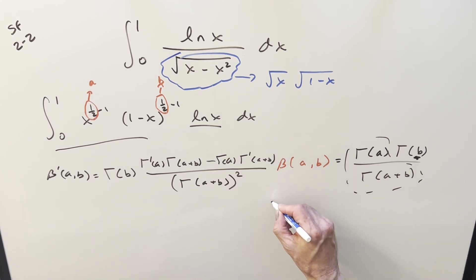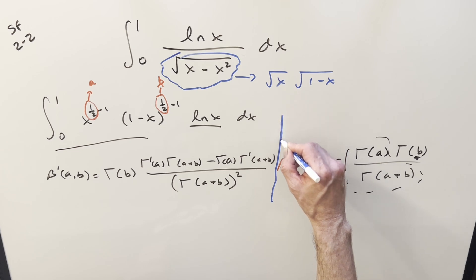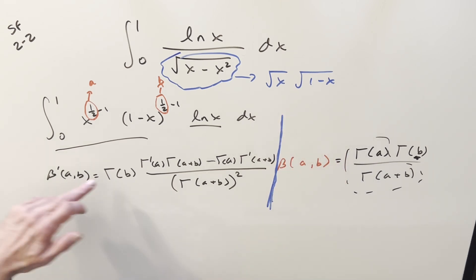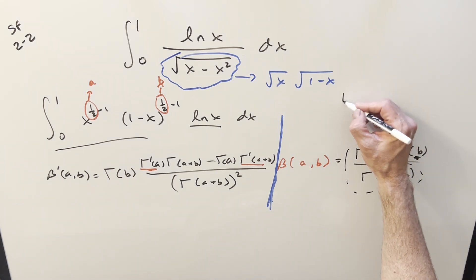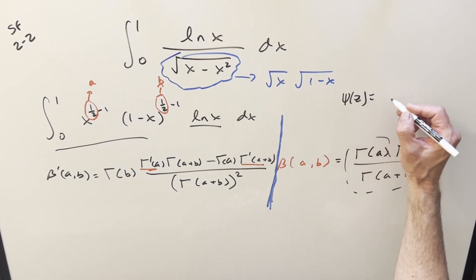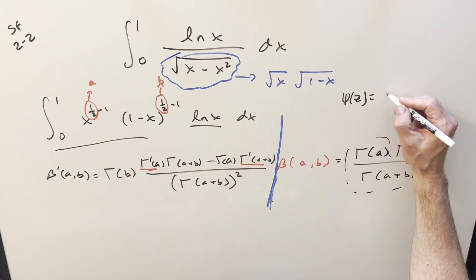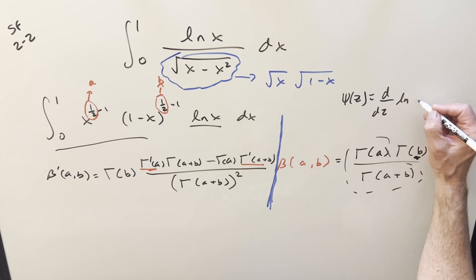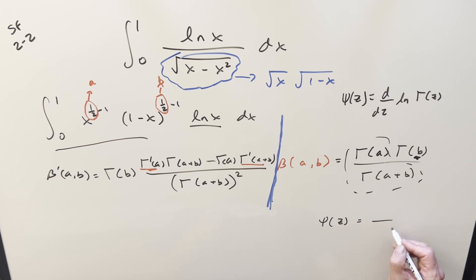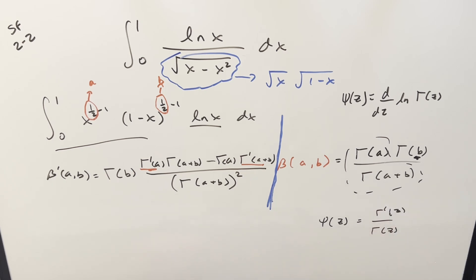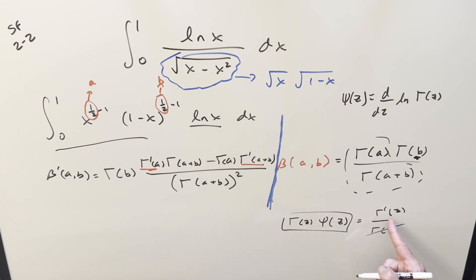I want to simplify this formula. I don't want these raw derivatives in here because I don't really know how to calculate them except by relating them to the digamma function. The definition of the digamma function is the derivative with respect to z of the natural log of gamma of z. When you take that derivative, you get one over gamma of z times the derivative of gamma of z by the chain rule. Multiplying both sides by gamma of z gives us a formula for the derivative of the gamma function.